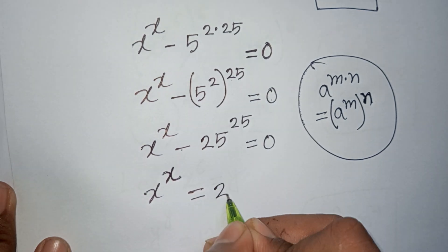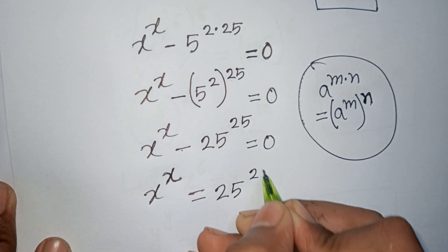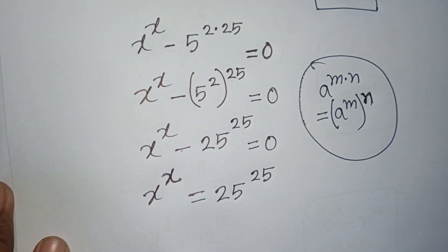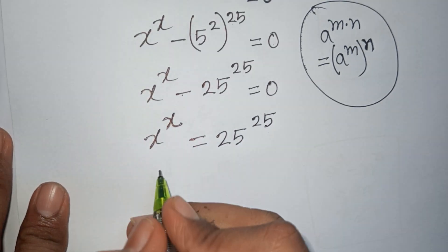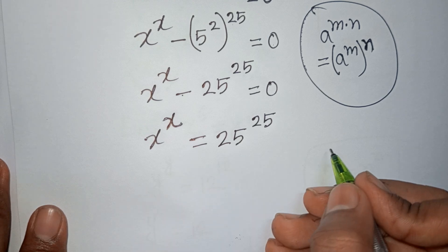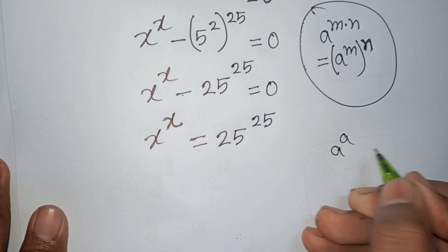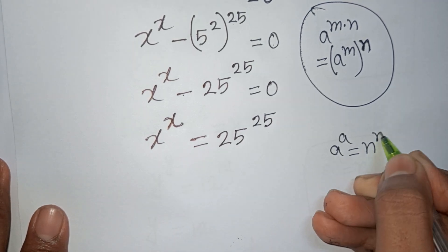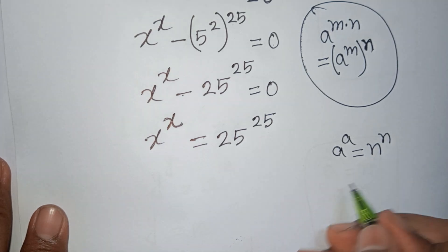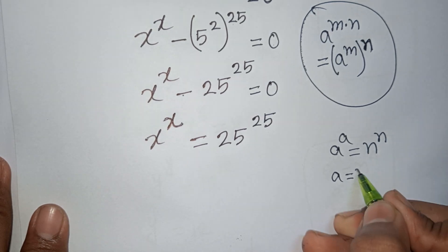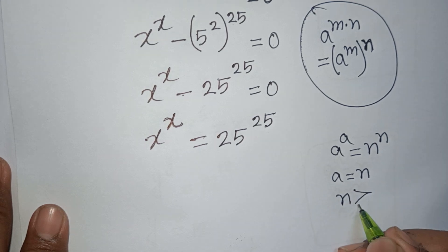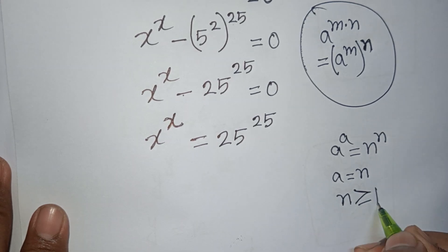Now I can apply the rule that if a^a = n^n, then a = n, where n is greater than or equal to 1.